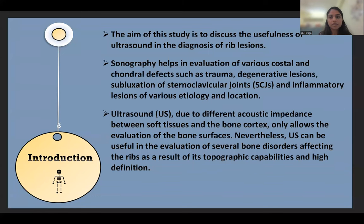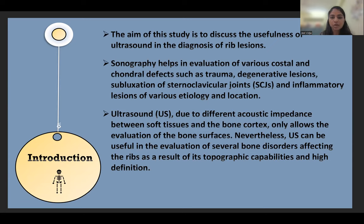The aim of this study is to discuss the usefulness of ultrasonography in the diagnosis of rib lesions. Sonography helps in the evaluation of various costal and cortical defects such as trauma, degenerative lesions, subluxation of the sternoclavicular joints, and inflammatory lesions of various etiology and location.